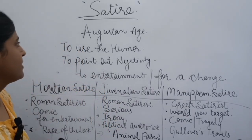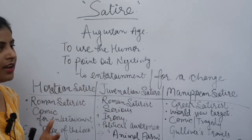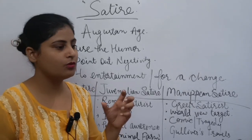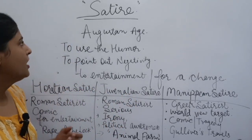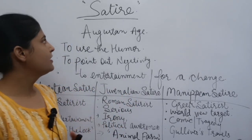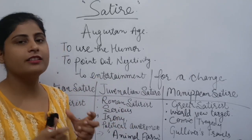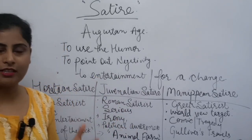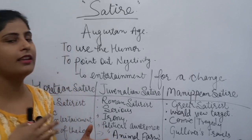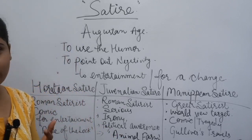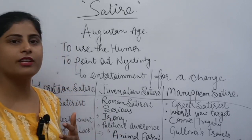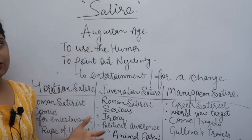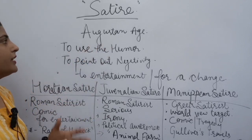What is satire? Satire means kisi ko tippadi karni, kisi ko point out karna. It's a literary term and it is used in every type of literature — like novel, drama, fiction, poetry etc. The Augustan age was its dominant era.